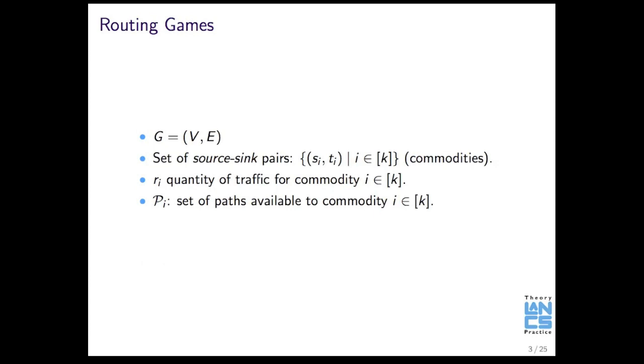To define a routing game, one needs a graph, which is defined using the vertex set and the edge set. The graph has a set of source-sink pairs, so where stuff goes from and where it goes to, and the stuff is a certain amount of commodities. And then we have a certain amount of traffic, which is the amount of stuff that has to go from each of those sources to sinks. And then what we have here is this PI, the set of paths available to each commodity, so the choices available to it, the ways you can get from A to B.